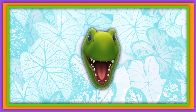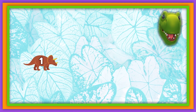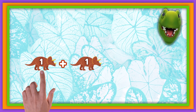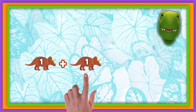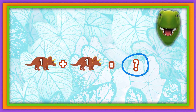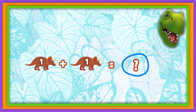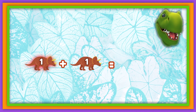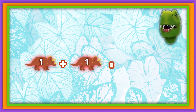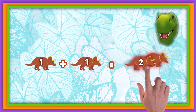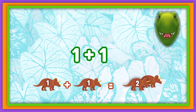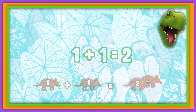Here, we have one dinosaur plus one dinosaur. If we add these numbers together, how many do we have? Let's count together. One, two. Yep, two dinosaurs. The answer is two.